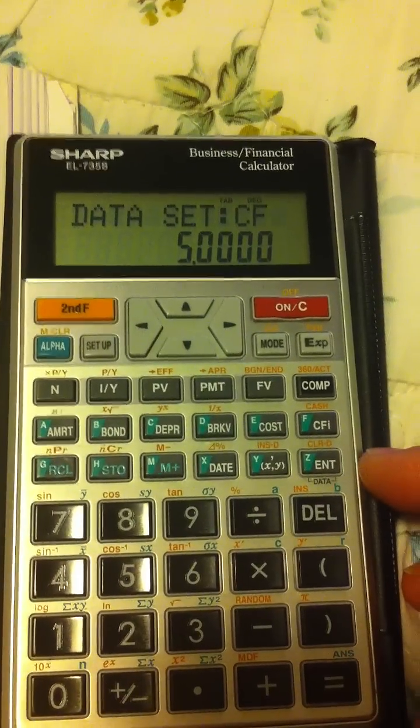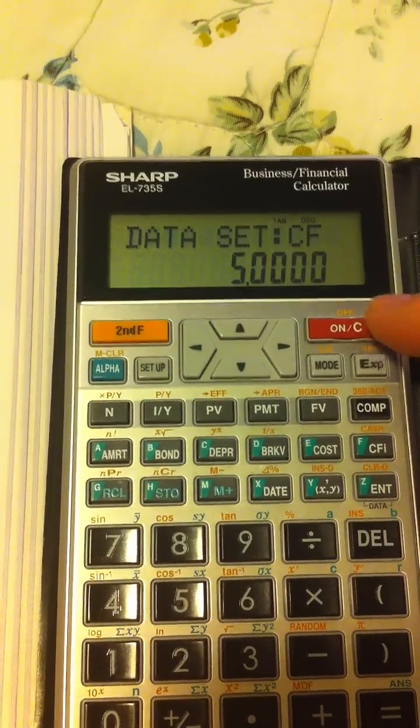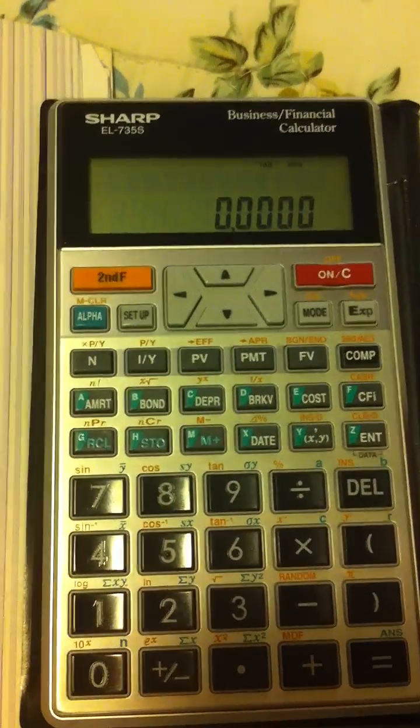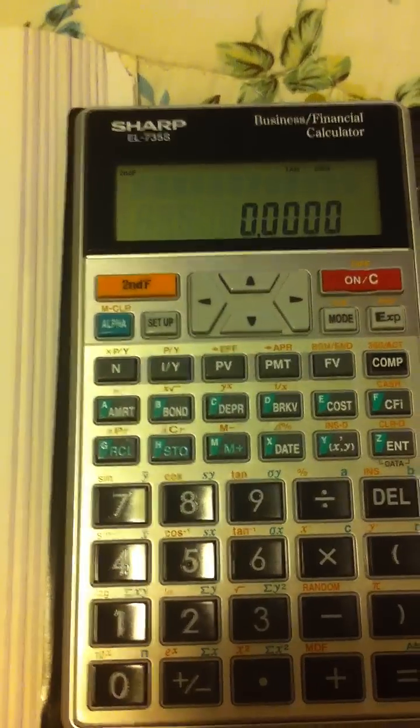You've put all the information in, so you can go to the next step. After this, you need to calculate your IRR. You're going to go second F (yellow button), second F, and after this you can see cash or CFI.